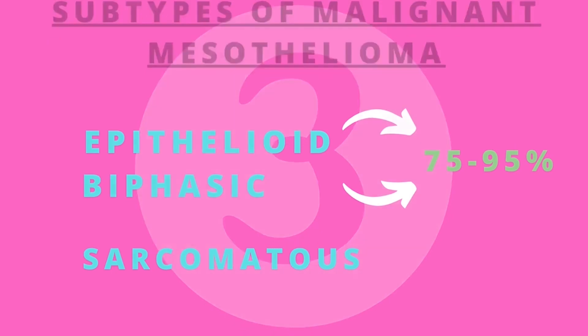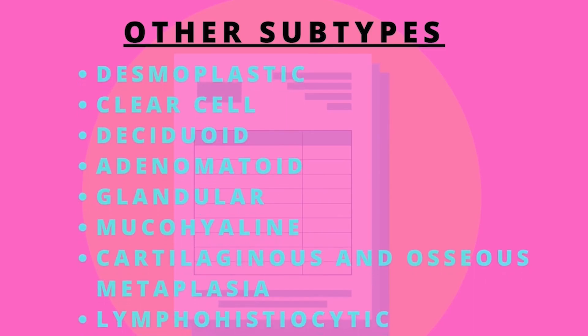Other morphological subtypes have been described as clear cell, glandular, desmoplastic, deciduoid, adenomatoid, lymphohistiocytoid, cartilaginous, and osteosarcomatous metaplastic.